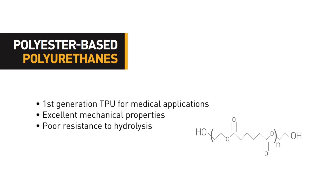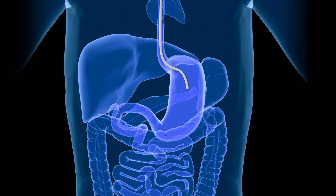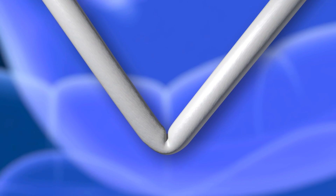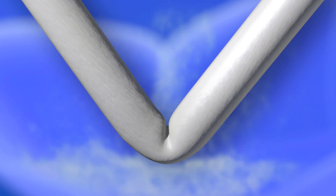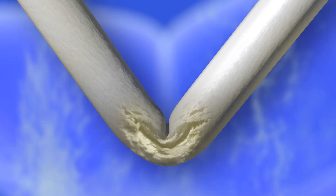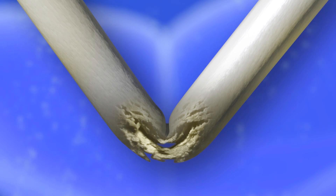Polyester-based urethanes were some of the first polyurethanes used in medical devices. These urethanes have the best mechanical properties, but were quickly found to rapidly degrade when introduced to the body. This rapid degradation is due to the susceptibility of ester groups to water-based hydrolytic cleavage, causing weakness and loss of integrity.